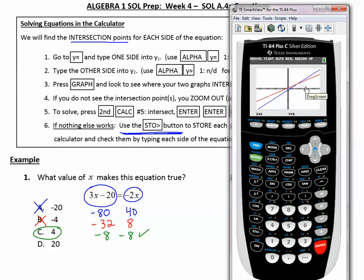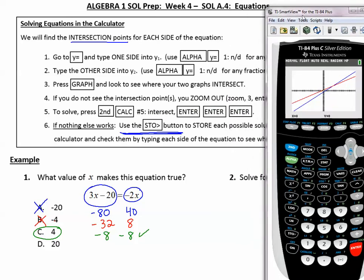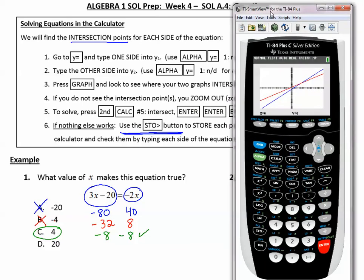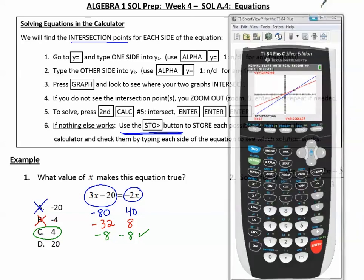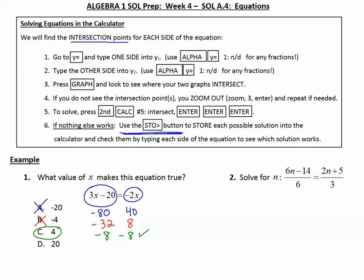So to solve, I'm going to press second, calc, number 5 for intersect, and then enter, enter, enter. So let's follow those steps. Second, calc, 5 is intersect, and then enter, enter, enter. And it tells me the intersection is where x equals 12. And that's what I needed is the value for x. So going back to my problem, I can write that x, but this is n, so n equals 12.